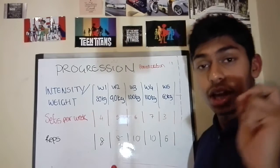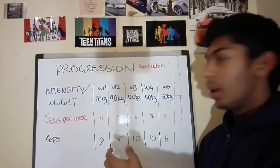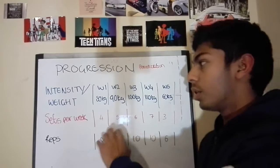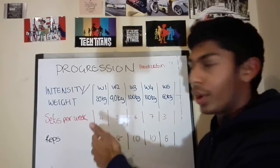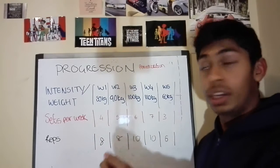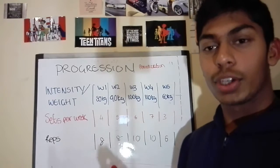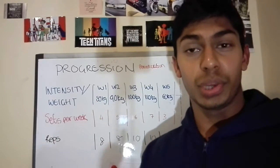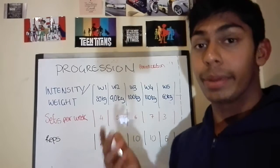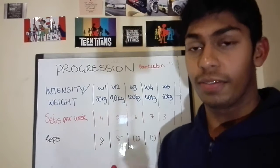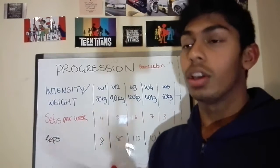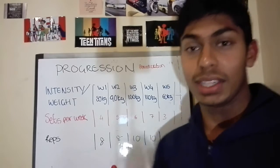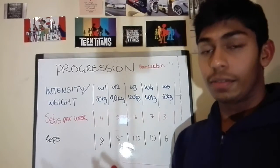Training to failure must be programmed specifically into your training program. It's usually incorporated in the last week — in this example, week four — where you want to functionally overreach. Moving from week one to week two, we're going to increment the weight. Here I'm incrementing by 10 kilograms each week. You can increment by however much you want: two, five, or 10 kilograms per week. It's going to depend on the exercise — on the squat and deadlift, 10 kilograms makes sense because you're a lot stronger on those than on the bench press.